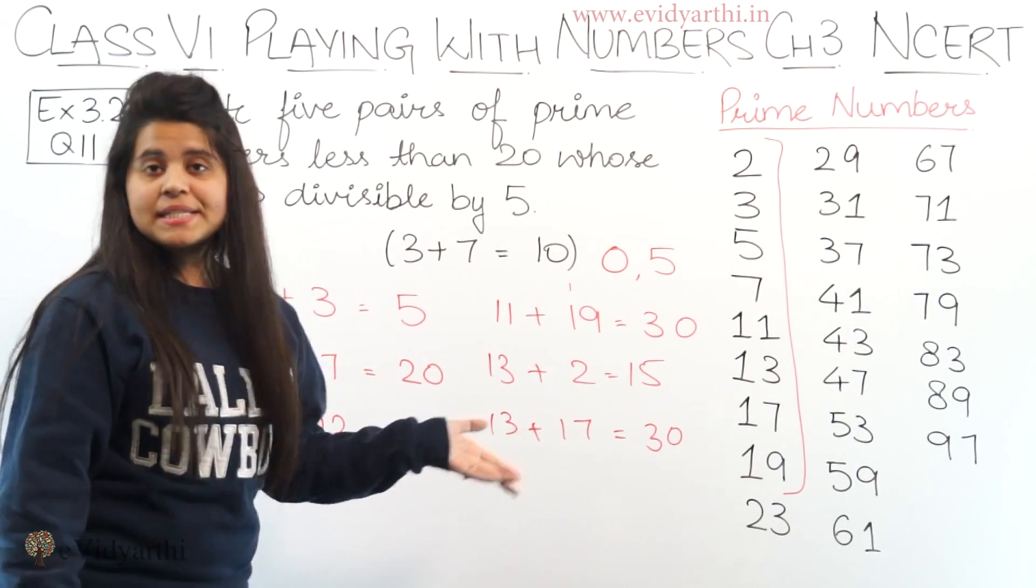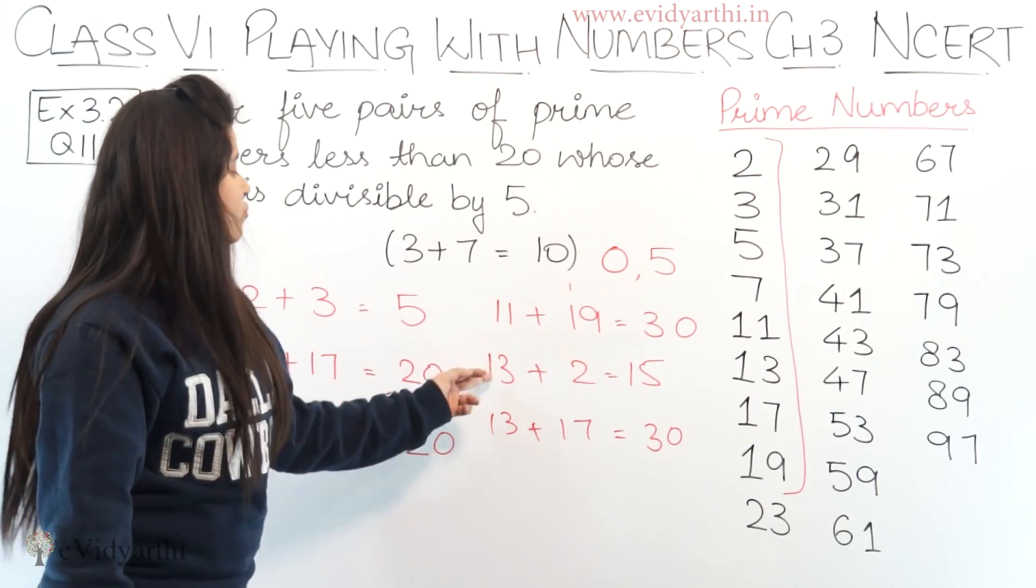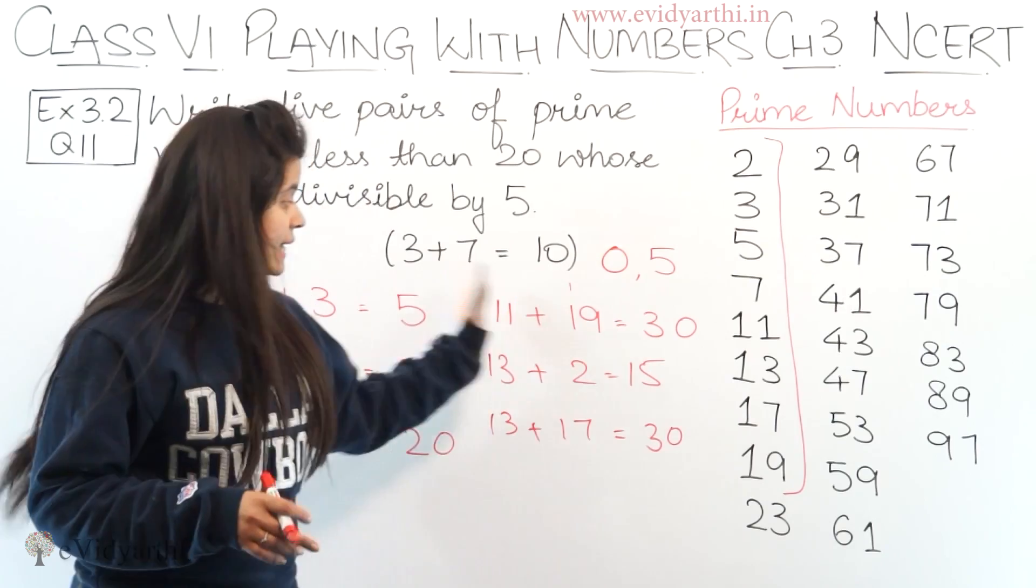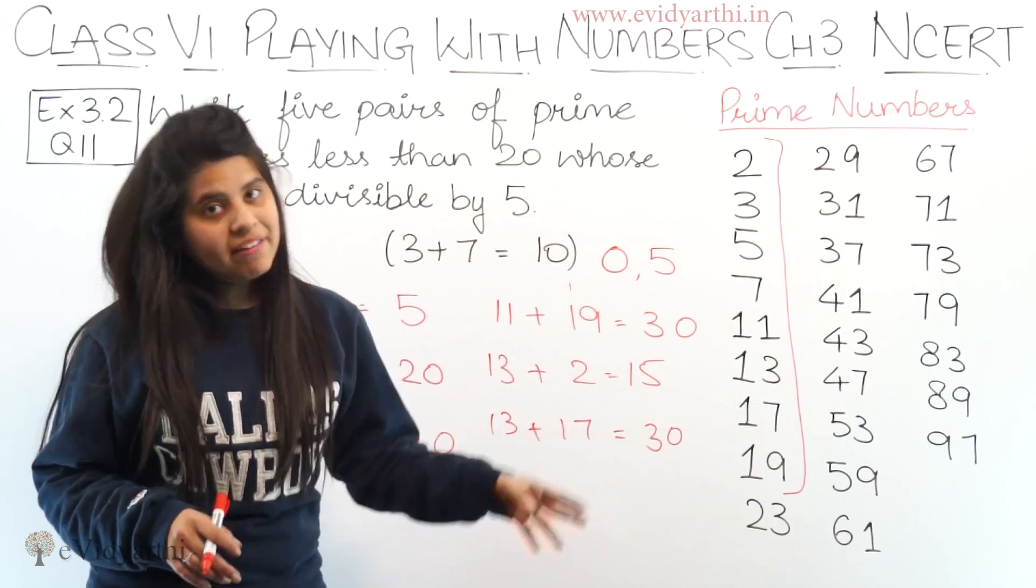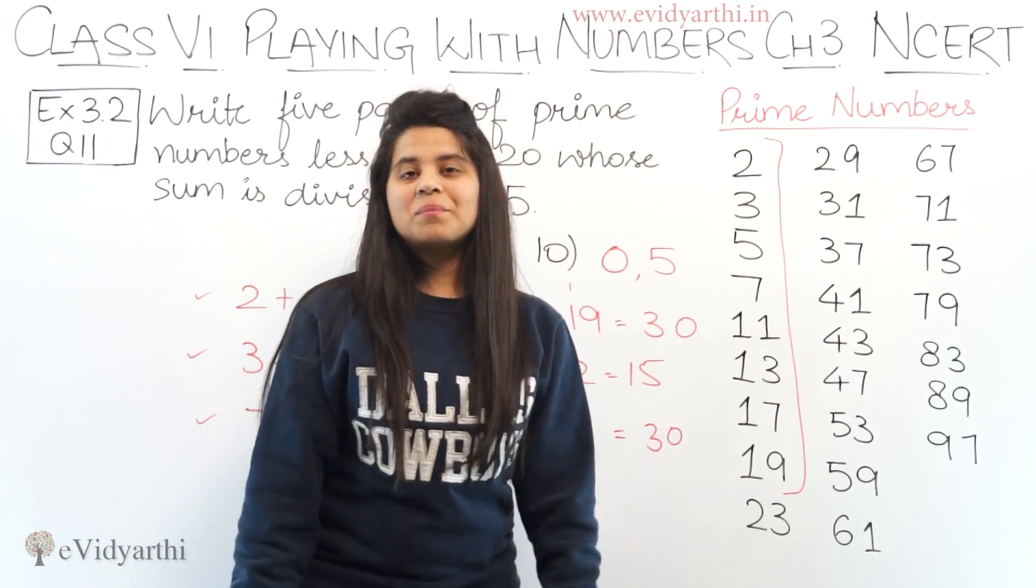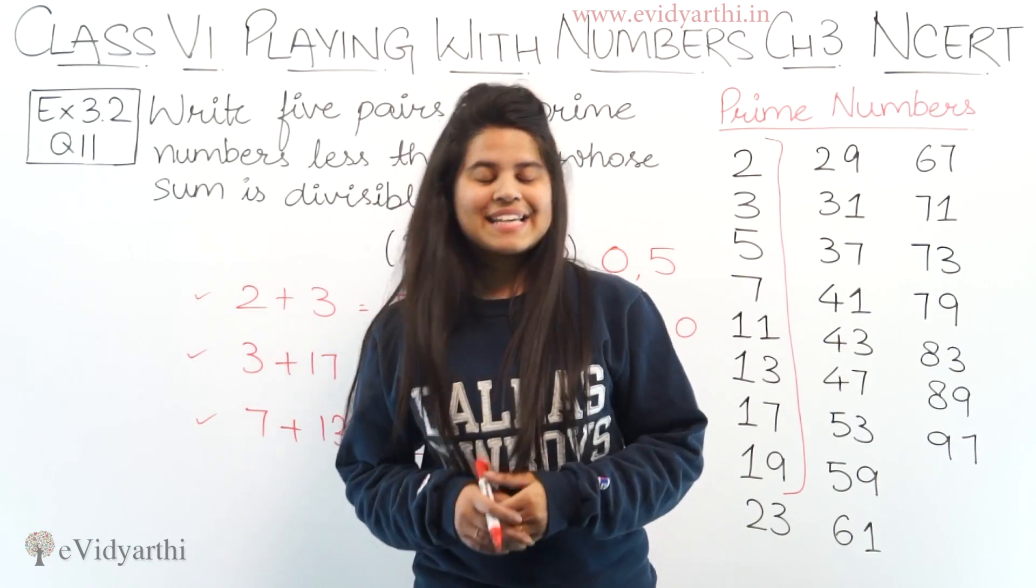Here we needed to give 5 pairs and we have 1, 2, 3, 4, 5, 6 pairs. Besides these, more pairs are also possible. So it's not necessary that these are the only pairs. Besides these, there can be other numbers too. But for now, let's take these examples and this was question number 11. Now let's come to the next question.